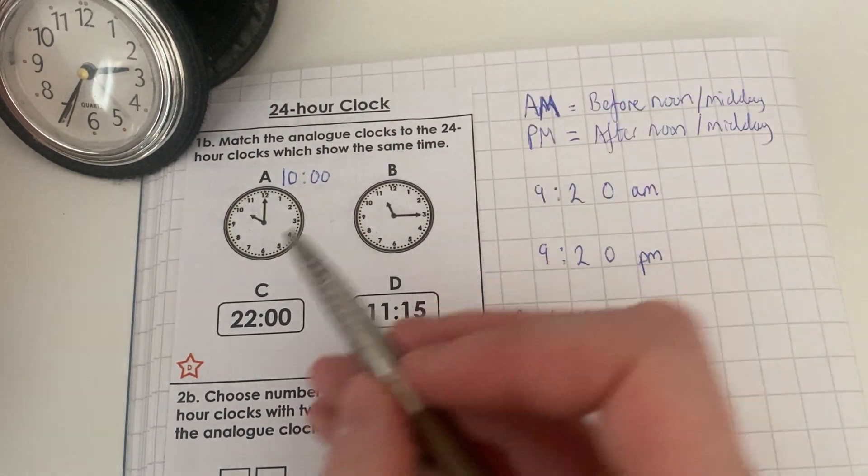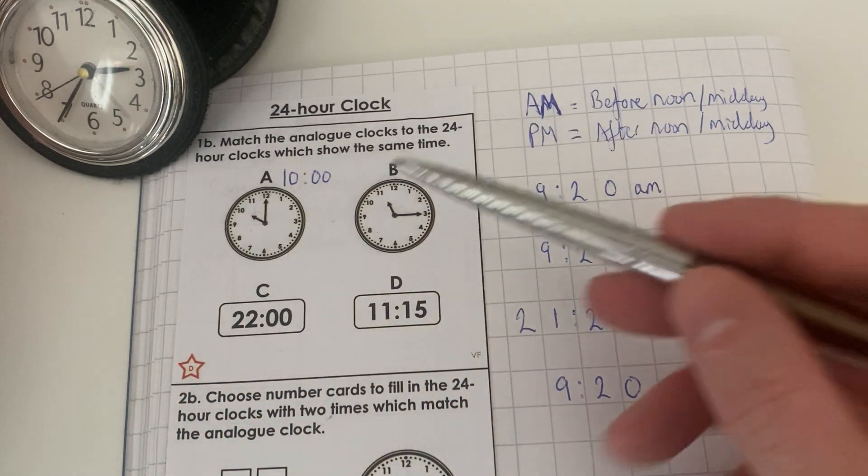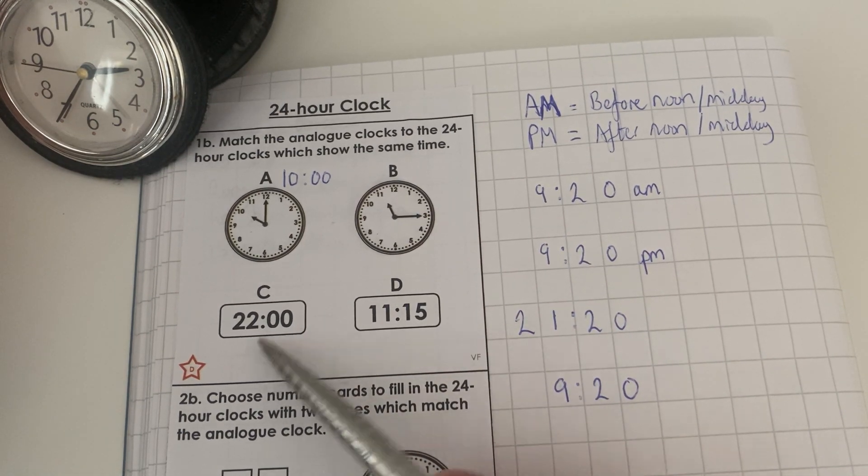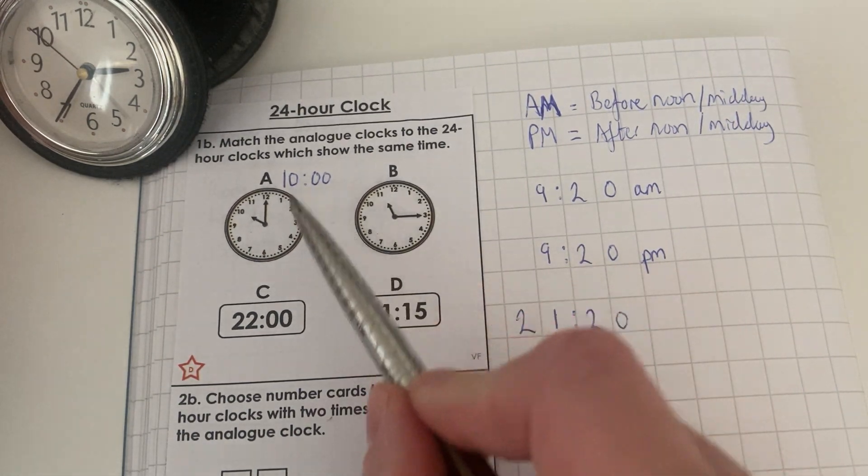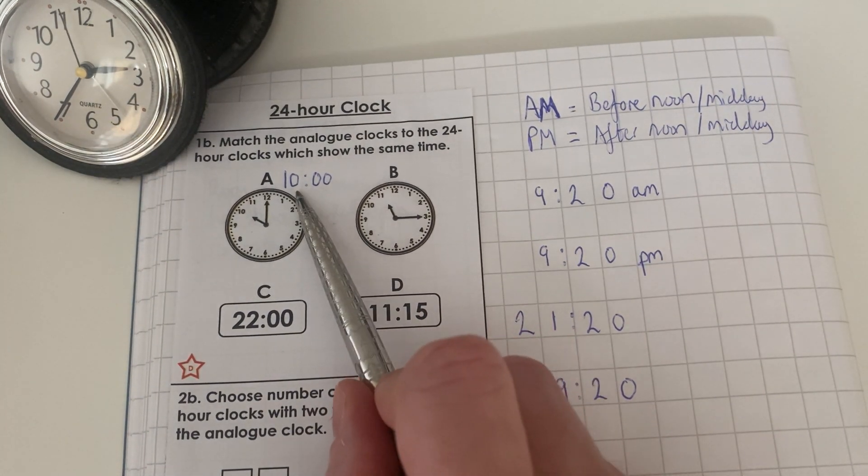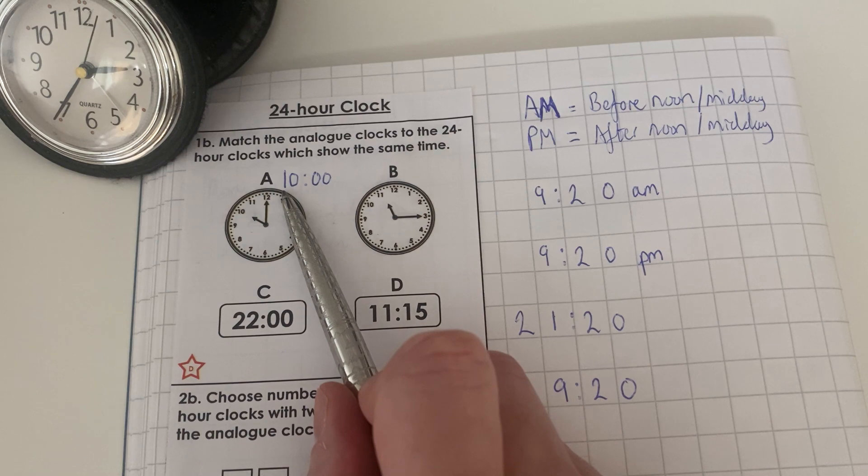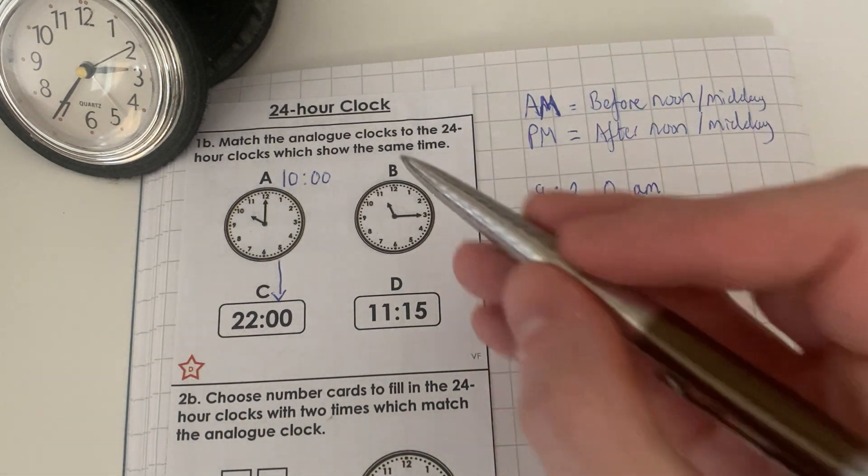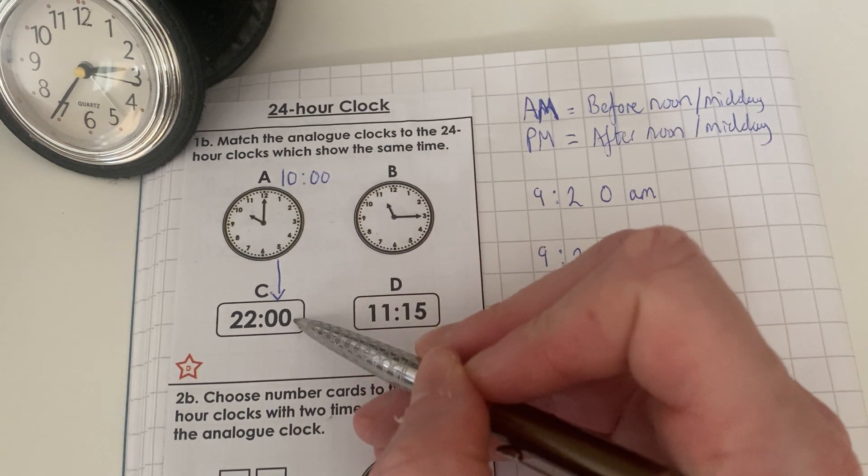We need to match which one of the analogue clocks matches to which time. Now, as you can see, we haven't got 10 o'clock written here. We've got 22:00 hours and 11:15. To be able to change this to an analogue clock, that means we must add 12 to the analogue clock to turn it into digital. So we need to do 10 plus 12. 10 plus 12 is 22. So this clock matches to this clock. This also tells us that this is 10 o'clock at night time, because we've converted it into its 24 hour digital clock.